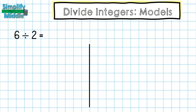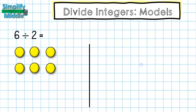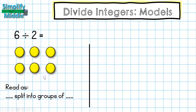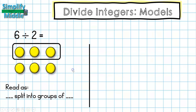Let's use the example six divided by two. That means I'm starting with six yellow chips because I have positive six. Read it as: the first number split into groups of the second number — six split into groups of two. I'll make two groups, and whatever is inside one group is my answer: three yellow counter chips, so my answer is positive three.